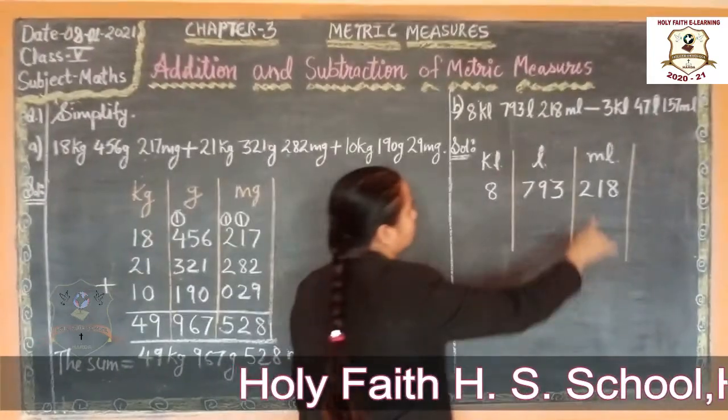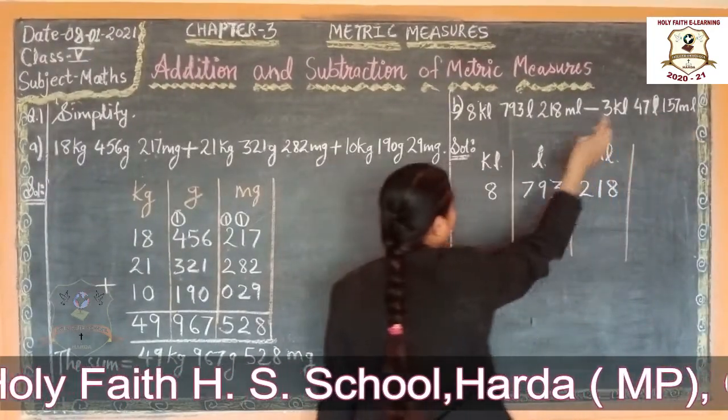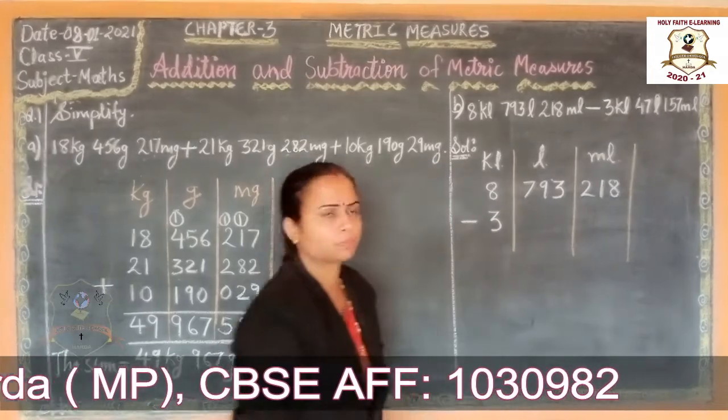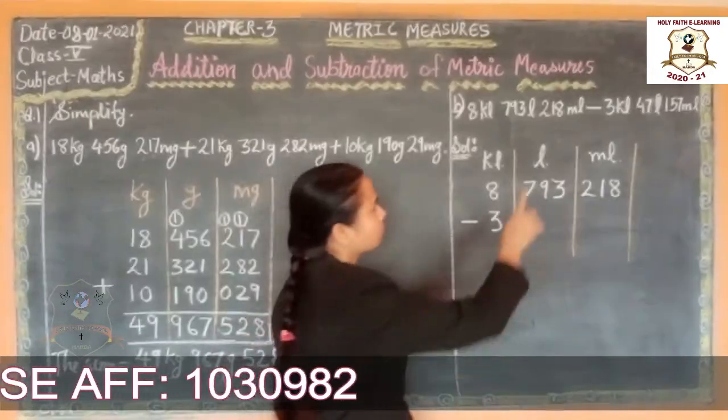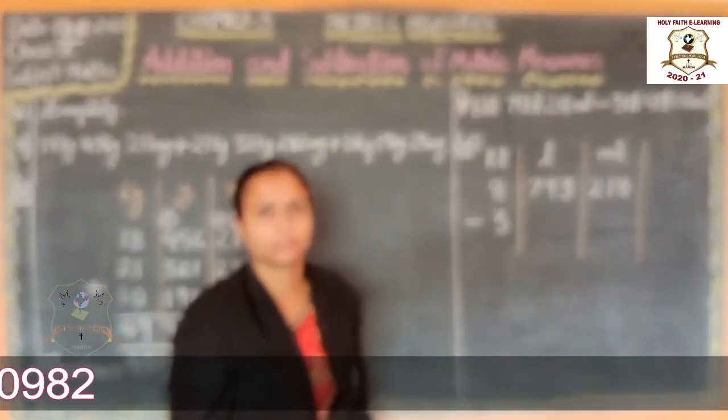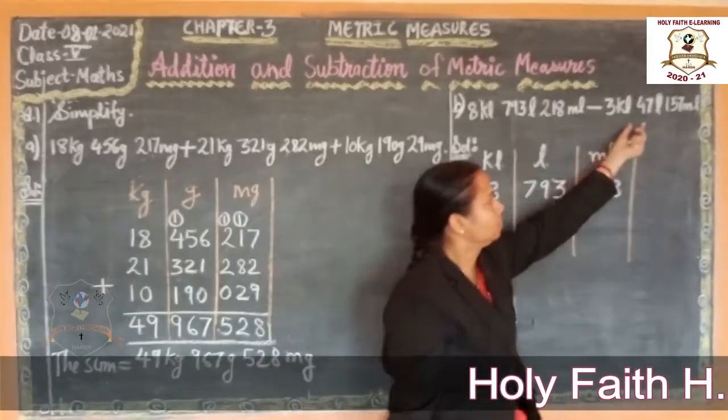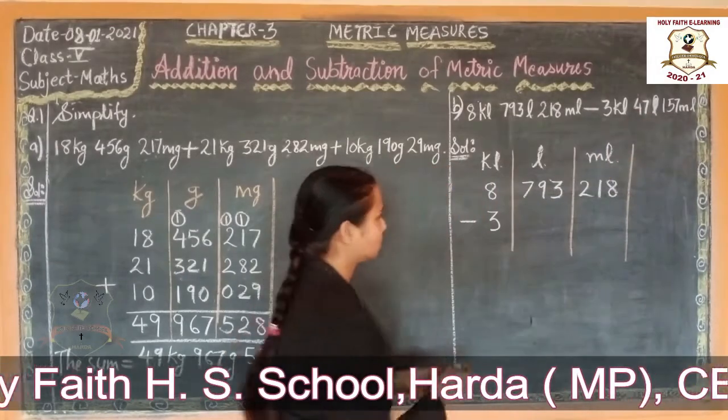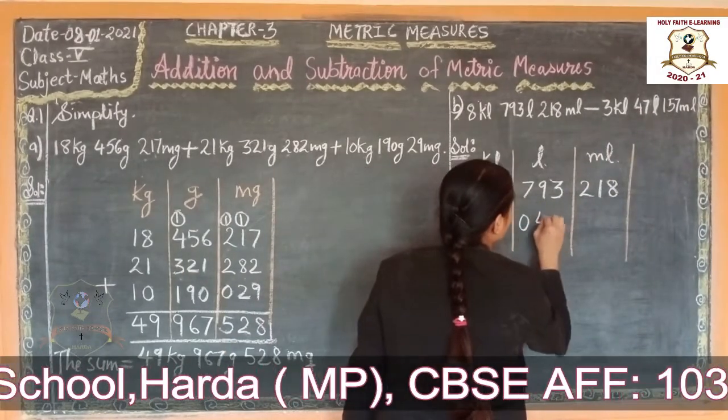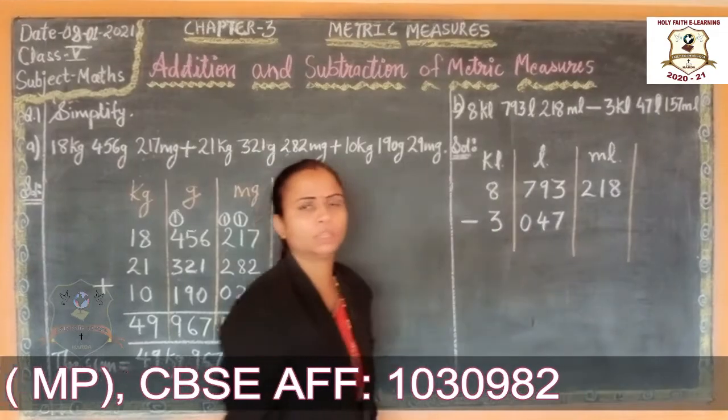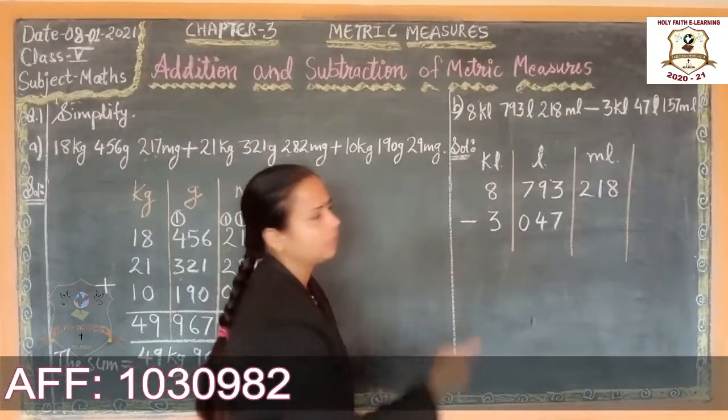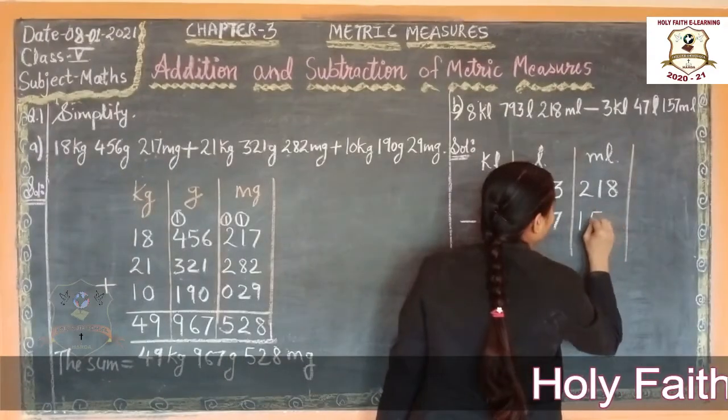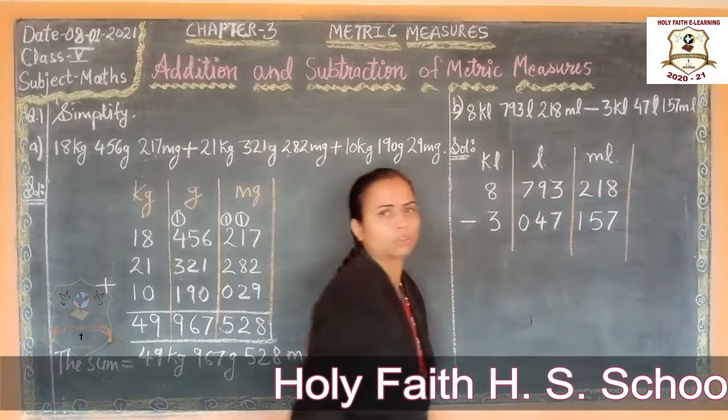Now write next here. 3 kilolitre. We write it as 3 kilolitre in kilolitre column. 47 litre. We put 0 before 47. So we write as 0, 4, 7. Now 157 millilitre. Follow. Understood.